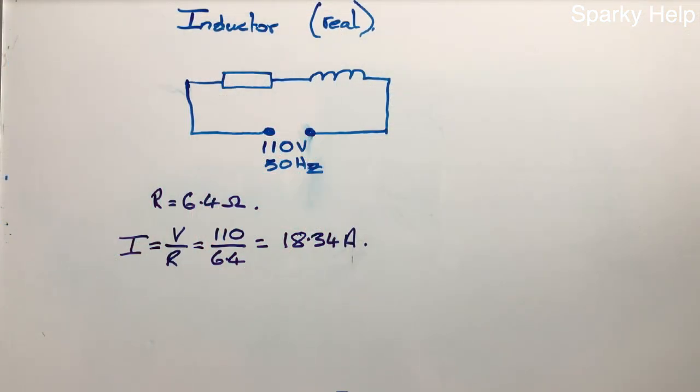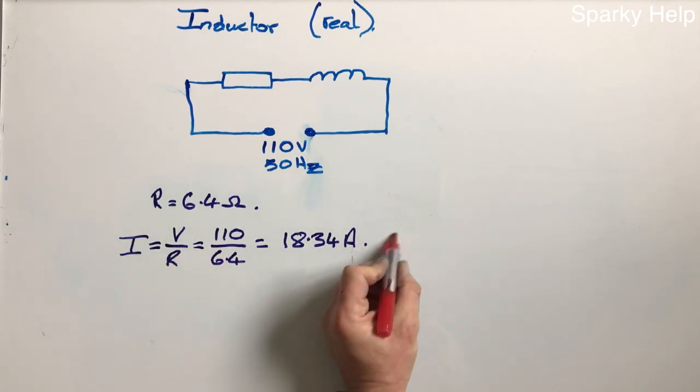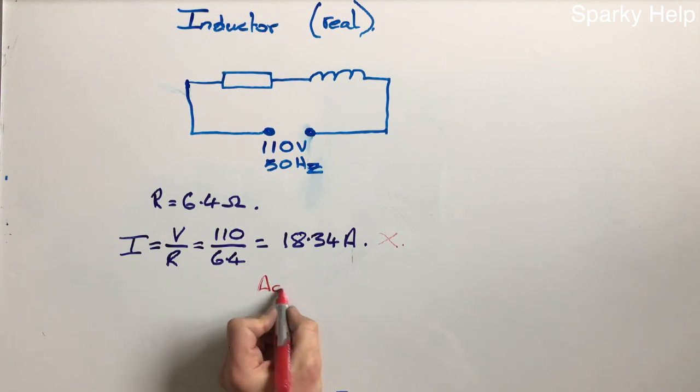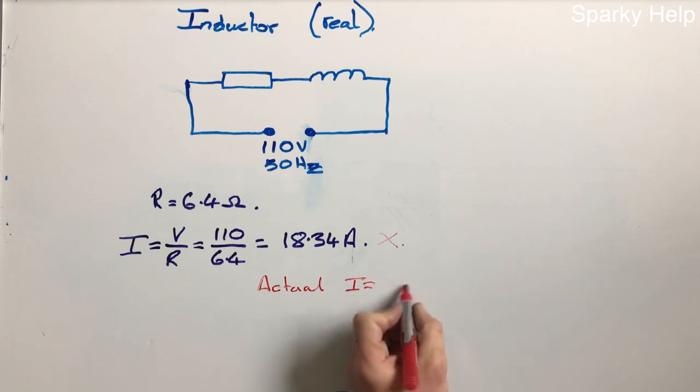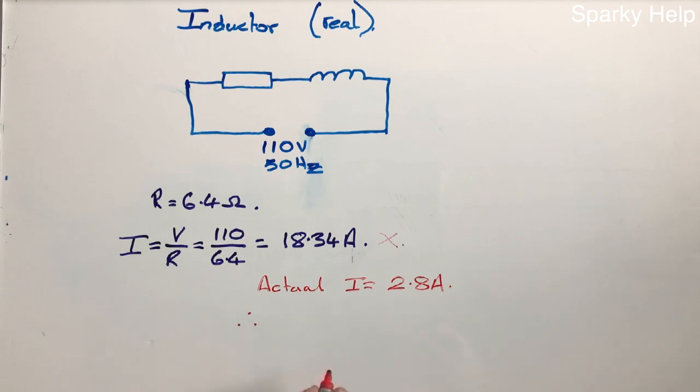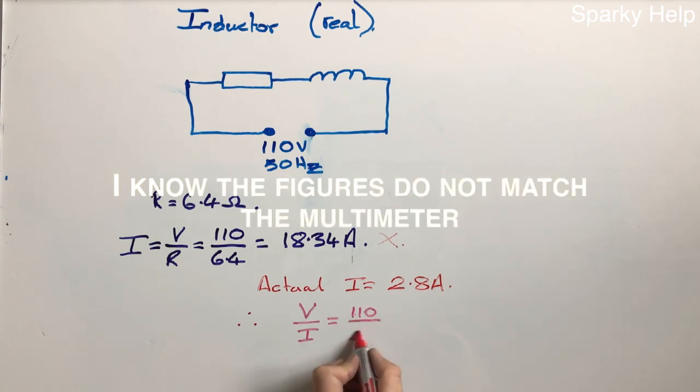And we can work out what the total opposition to current flow of that circuit is using those figures. That's calculated current, which is actually wrong. The actual I is 2.8 amps. Therefore what we can do is we can calculate what the total opposition to current flow is, which is V divided by I. And if we do that, that becomes 110 divided by 2.8.